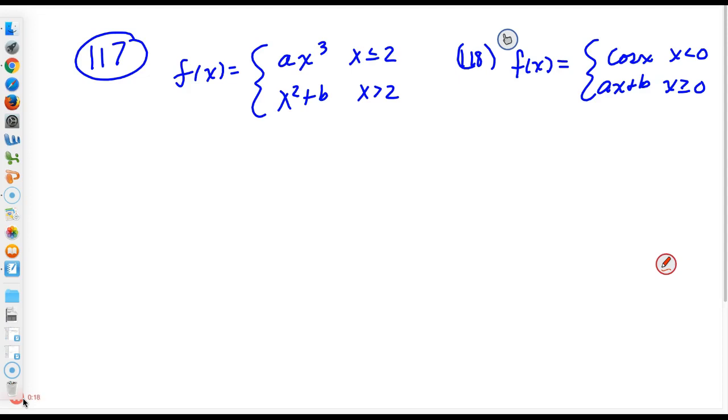So the directive was to find A and B that would make the function F differentiable. For a function to be differentiable, it must be continuous.